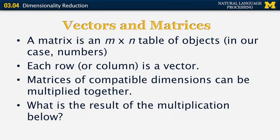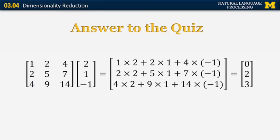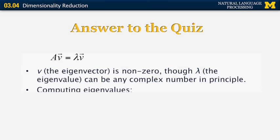The way that matrices are multiplied is very simple: you multiply the values in the first row with the values in the first column, add them up, and the result goes into the cell corresponding to the first row and first column in the product. So the first row of the product is 1×2 + 2×1 + 4×(−1) = 0. The second row is 2×2 + 5×1 + 7×(−1) = 2. And finally, 4×2 + 9×1 + 14×(−1) = 3. So the product of those two matrices is the vector [0, 2, 3].